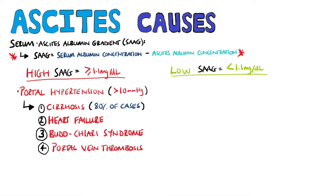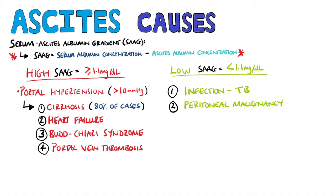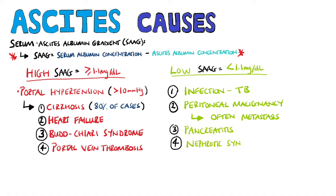On the other hand, a low serum ascites albumin gradient suggests causes such as infections like TB, peritoneal malignancy — which is often a metastasis from another cancer, perhaps ovarian cancer — pancreatitis, and nephrotic syndrome.